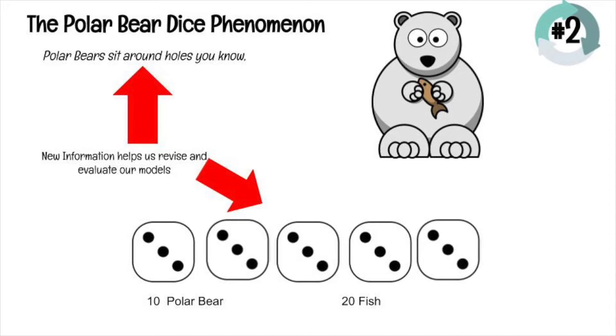So what's your guess? How do you think these dice represent polar bear? And how do you think these dice represent fish? If you think your model's good, you can leave it. But if you have a new guess based on this new information, go ahead and revise your model. Make a change. See if it fits. You're going to see another dice roll in just a minute.